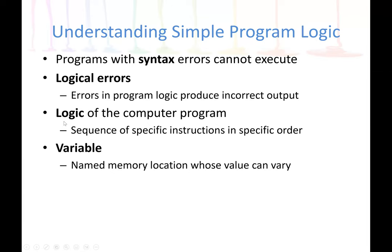We also have what is called the logic of a computer program — the sequence of specific instructions in a specific order. In programming, selection statements change the order in which the program executes based on whether a condition is true or false. A loop means doing something over and over again. Every programming language has three types of control structures: sequence (the program executes from top to bottom), selection (a condition that can change the flow of the program), and repetition (loops).